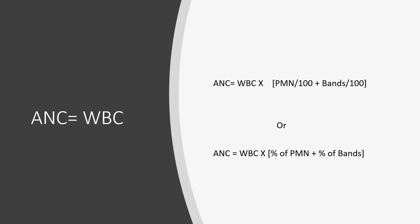We can accurately estimate the absolute neutrophil count using two methods. Either: ANC = WBC count × (polymorphonuclear cells / 100 + bands / 100), or ANC = (percentage of polymorphonuclear cells + percentage of bands) × white blood cell count. That gives us the absolute neutrophil count.